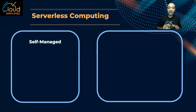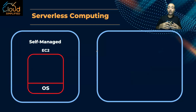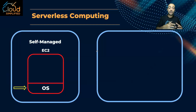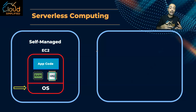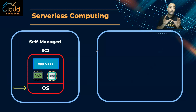The first model that we know is the self-managed or the self-provisioned. In this model, I start by deploying an EC2 instance. This EC2 instance has an operating system, so as an administrator I always need to make sure that it is patched to the latest patch in order not to have any vulnerabilities. Then I start by installing my application code, which consumes the resources of the EC2 instance — the memory and the CPU. So I need to make sure I'm choosing the proper EC2 instance.